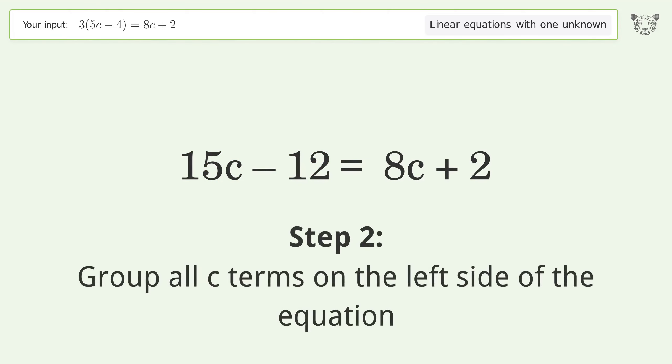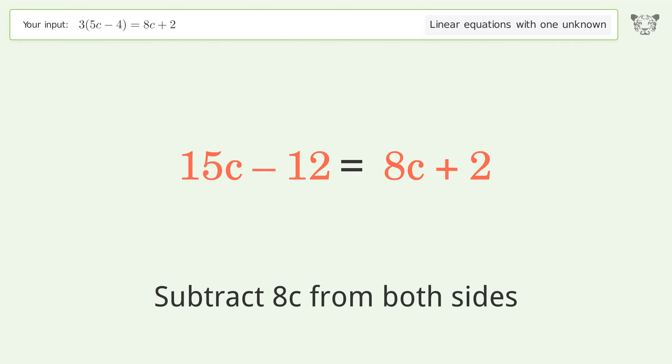Group all c terms on the left side of the equation. Subtract 8c from both sides.